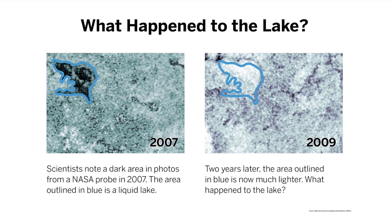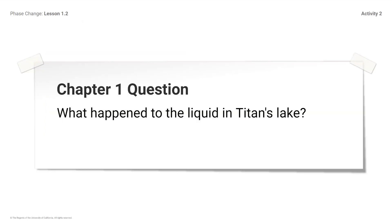What happened to the lake? Scientists note that a dark area is visible in photos from a NASA probe in 2007 — the area outlined in blue is a liquid lake. Two years later, the area outlined in blue is now much lighter. Chapter one question: What happened to the liquid in Titan's lake? Let's investigate this question further.